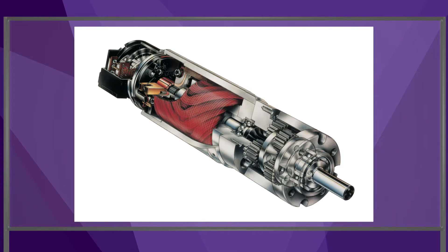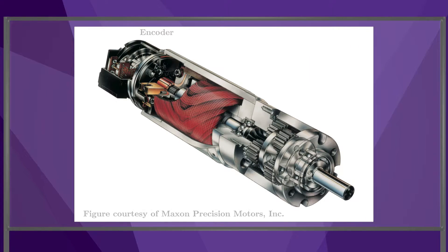This is an image of a typical robot actuator. At one end of the motor is an encoder, a sensor that measures how far the motor has rotated so we know the joint position.